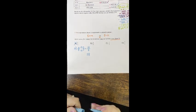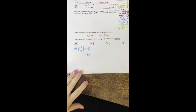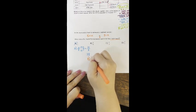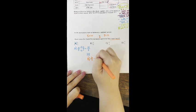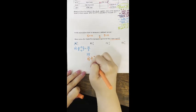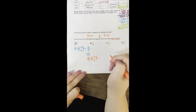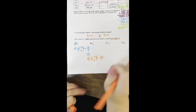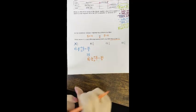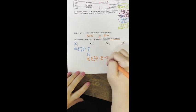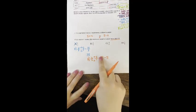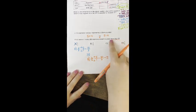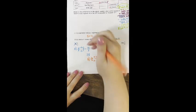Let's try answer choice B, which was 6 over 6. We are multiplying by the whole number 5, so whole number goes over 1. Top times top, bottom times bottom: 6 times 5 is 30, and 6 times 1 is 6. 30 over 6 is improper, so when we divide, we get 5. Because 5 is not more than 5 — 5 is equal to 5 — B is also wrong.